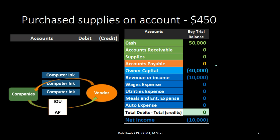First question: is cash affected? In this case, no. How do we know it's not affected? Because the problem says 'on account.' On account generally means accounts receivable or accounts payable. In this case it means accounts payable, meaning we bought something but have not yet paid for it.